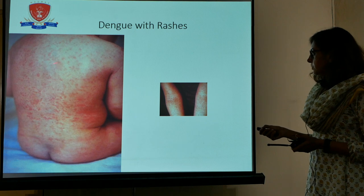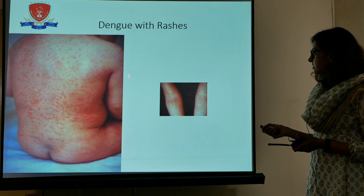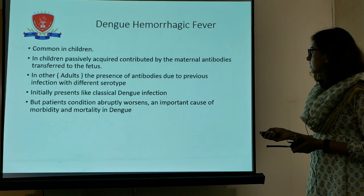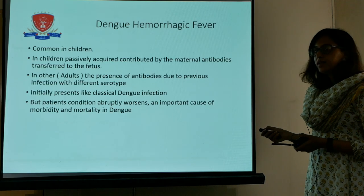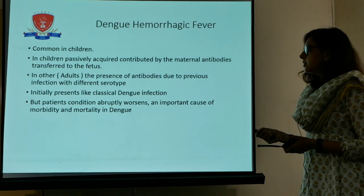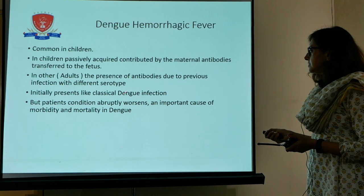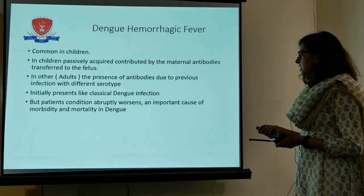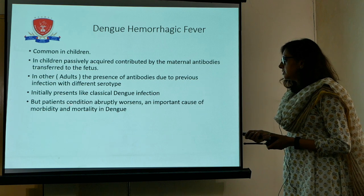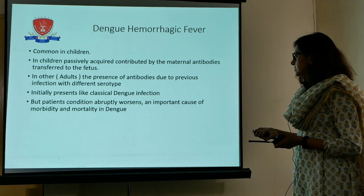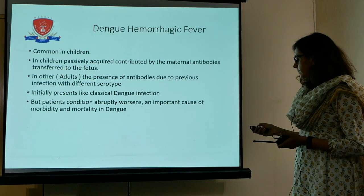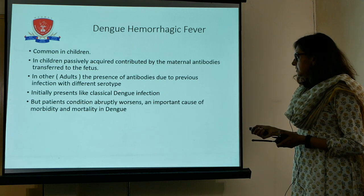This picture shows the patient presenting with rashes due to capillary leak. Dengue hemorrhagic fever is commonly seen in children. It initially presents as classic dengue infection, but the condition rapidly deteriorates and the patient may have high mortality or morbidity.